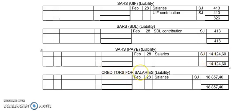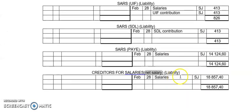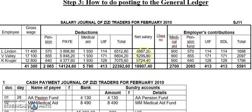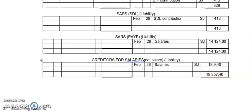And then there's creditors for salaries. Now listen carefully: creditors for salaries is always the net salary. It's a liability because we are owing the staff these salaries — we need to record it as a liability. So you go to the net salary total. There's net salary: 18,907.40. I need to make sure I have the right amount — 18,907.40. Now I've just done step one.